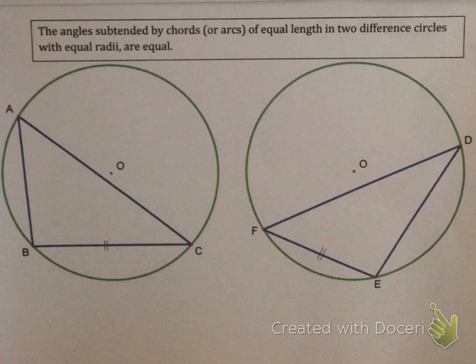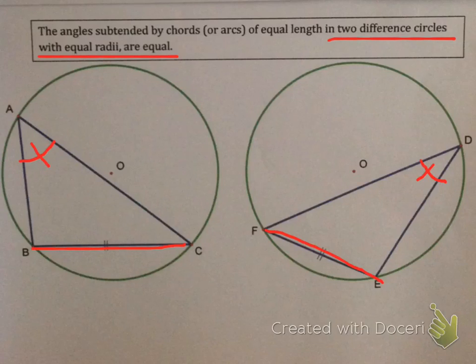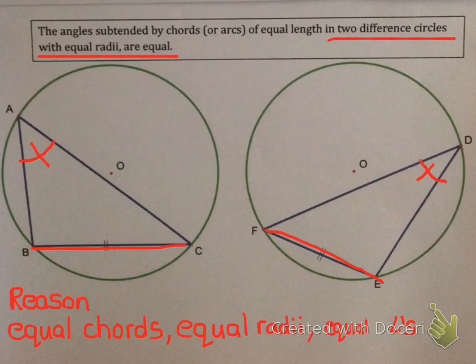Our last corollary says if we have equal chords in two different circles, but these circles have equal radii—so basically they're exactly the same circle with exactly the same length of chord—then the angles they subtend at the circumference are also equal. Our reason here is equal chords, equal radii, equal angles.